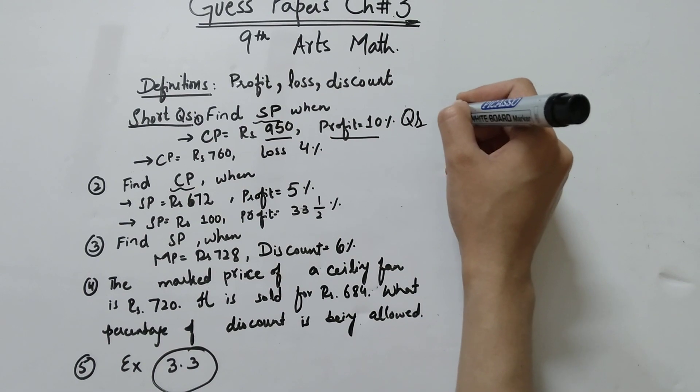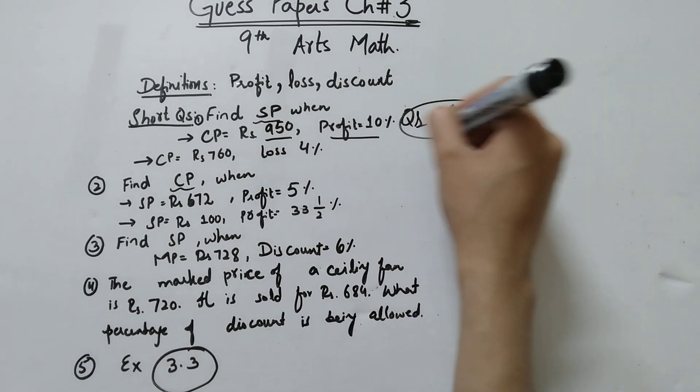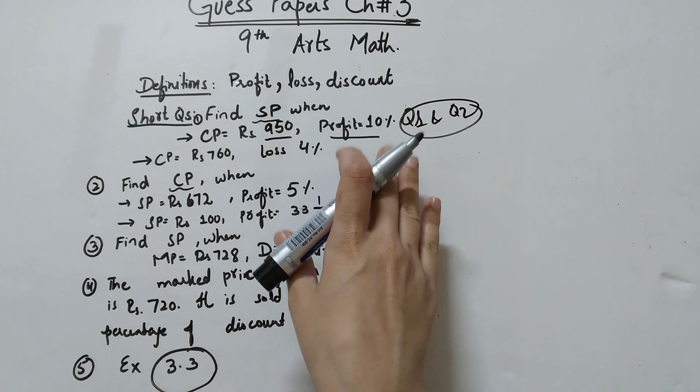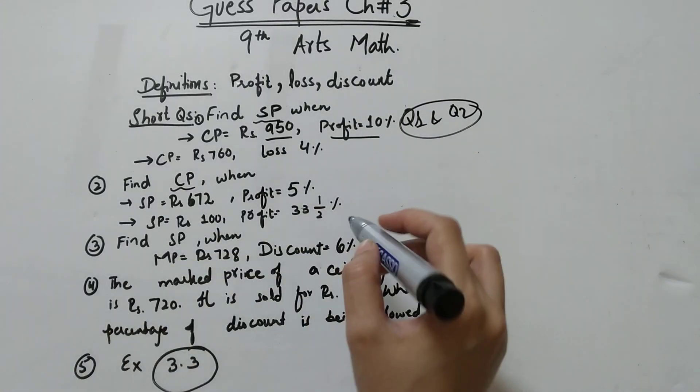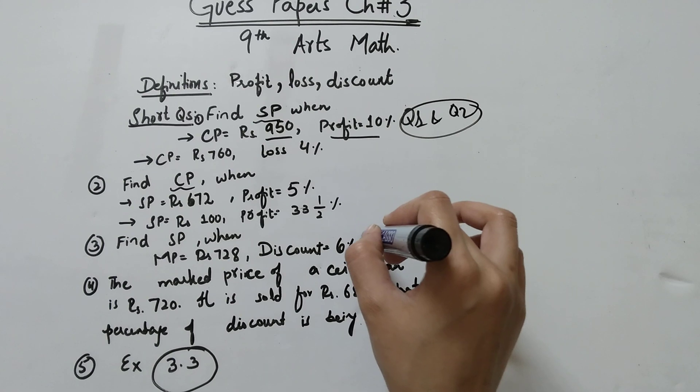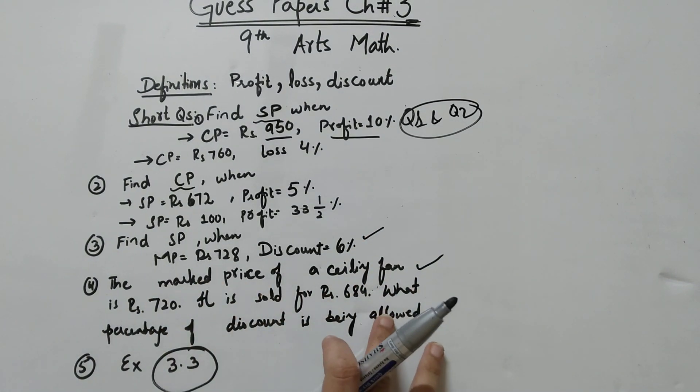Question number 1 and question number 2. All parts should come from exercise 3.1. Exercise 3.2 is a short question. This is SP and this is a short question which is very important.